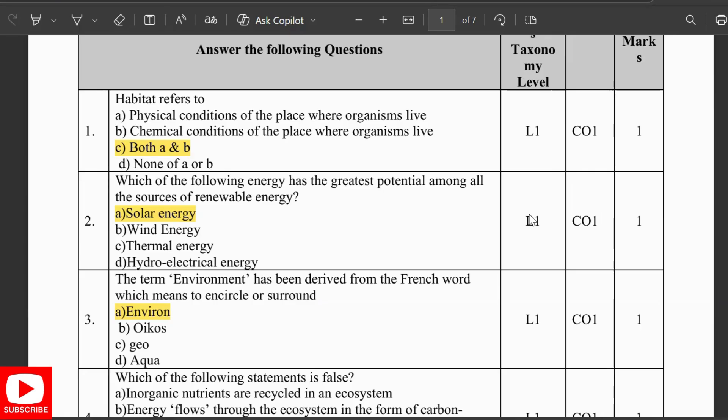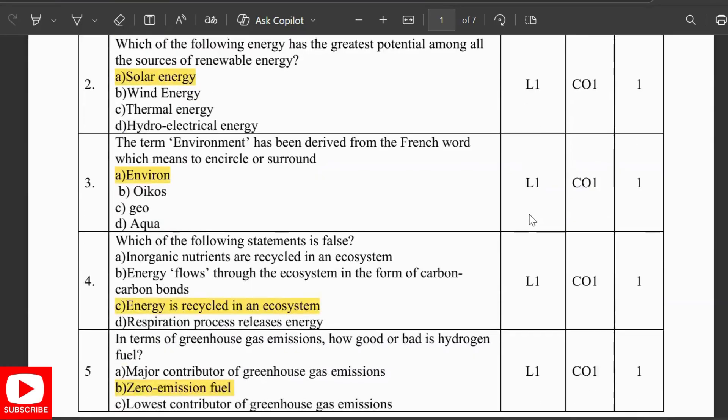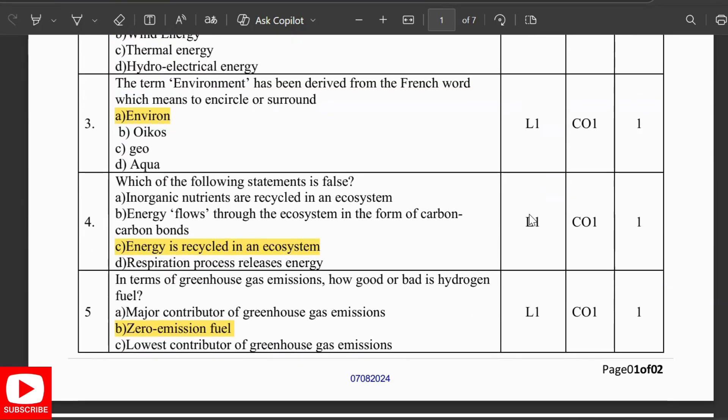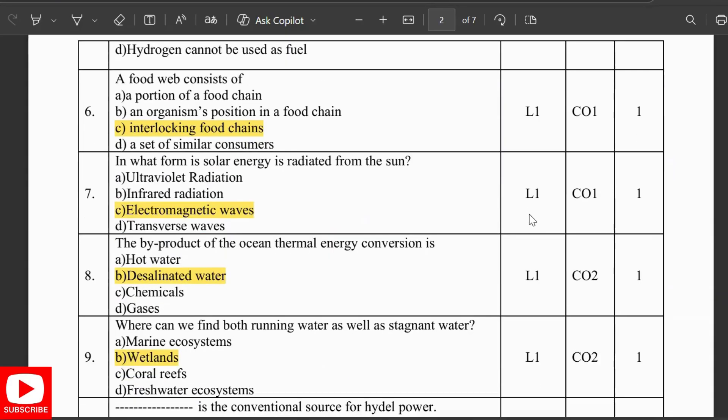Which of the following statement is false? Enough energy is recycled in an ecosystem is false. In terms of greenhouse gas emissions, how good or bad is hydrogen fuel? It is zero emission fuel. A food web consists of interlocking food chains.